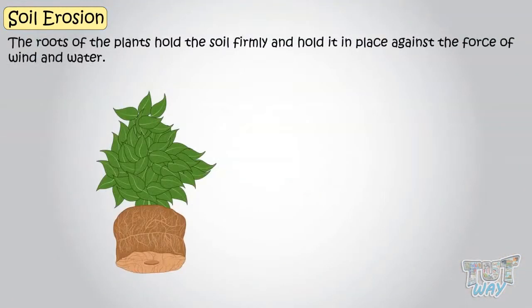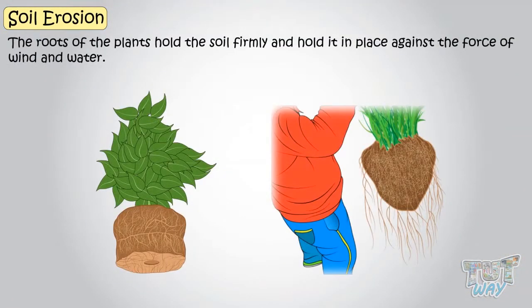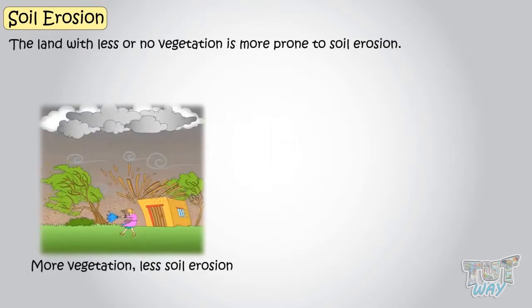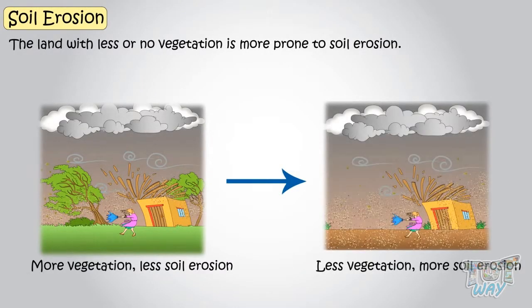Roots of plants hold the soil firmly and keep it in place against the force of wind and water. So land with no or less vegetation is more prone to soil erosion.